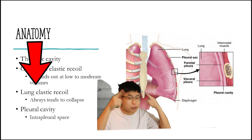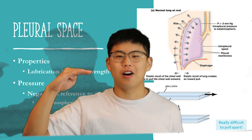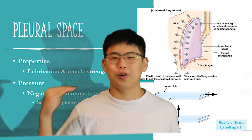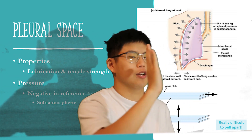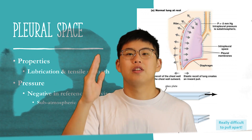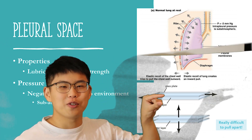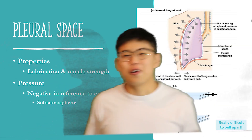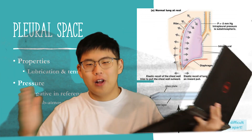Between your lungs and the chest wall exists a fluid-filled space called the pleural cavity. Think of a balloon blown up inside another balloon — the space between those balloons is analogous to the intrapleural space. The pleural space provides lubrication as the lung moves against the chest wall during breathing, and the fluid provides surface tension to keep the lungs in contact with the chest wall.